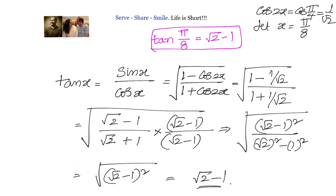The key idea is that even though we don't know the trigonometric ratios of π/8 directly, we know its double angle π/4, and we know sin(π/4), cos(π/4), and tan(π/4). So we express tan(x) in terms of tan(2x) or cos(2x) to find the value of tan(π/8).